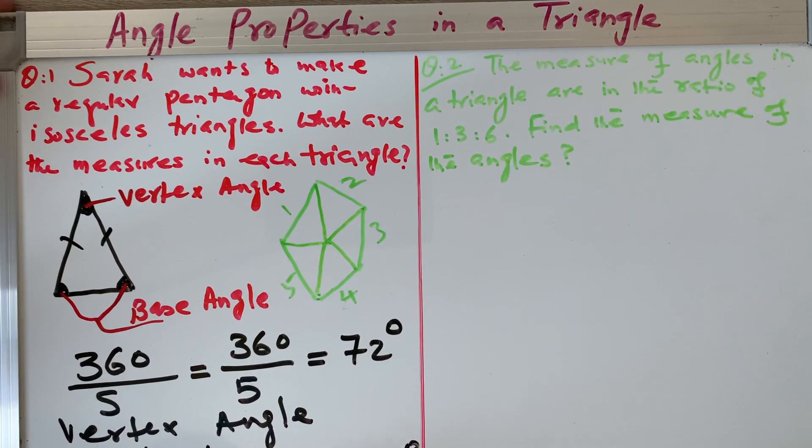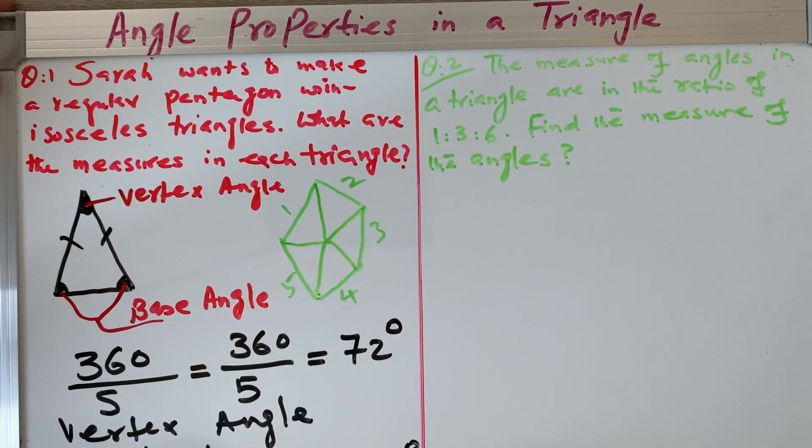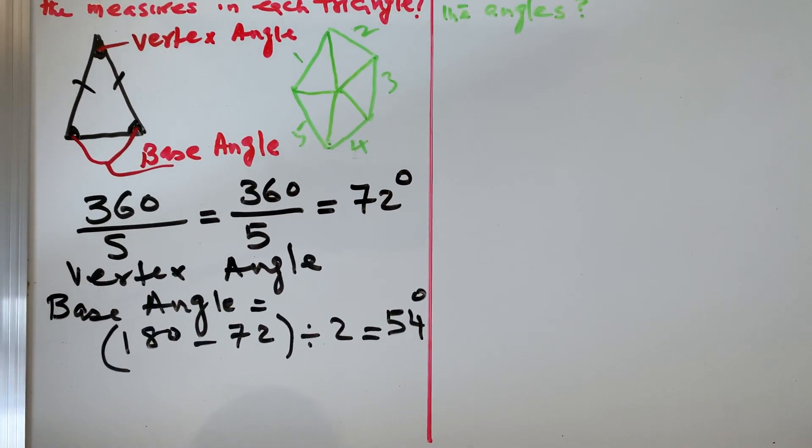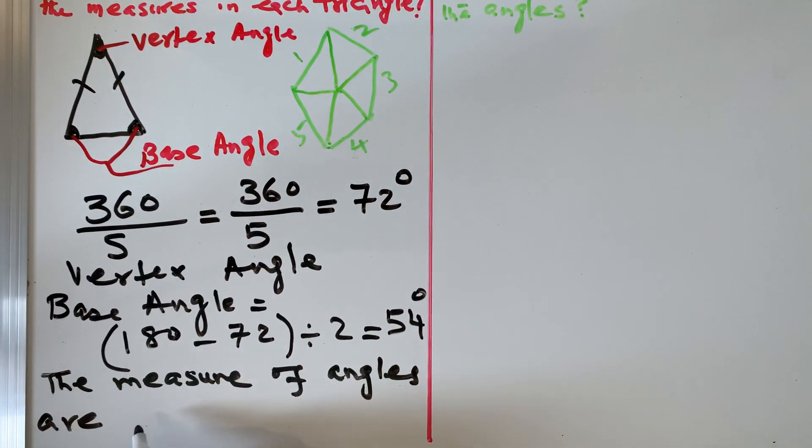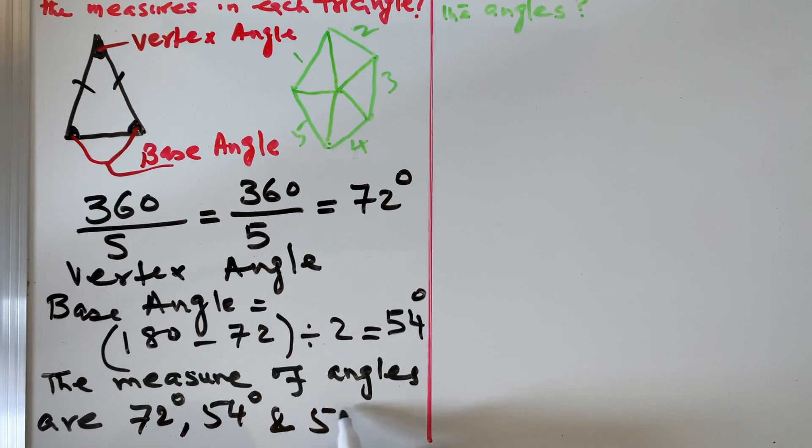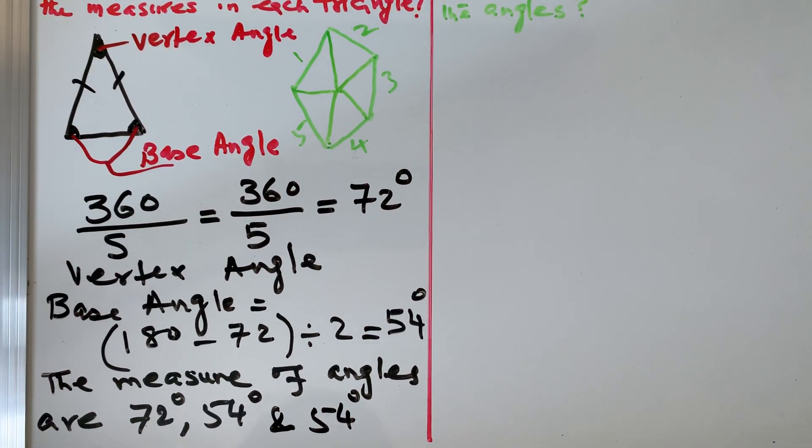Sum of all angles of a triangle is 180. 180 minus 72 gives me the sum of two angles. But these two angles are equal. The base angles are equal, so we divide it by 2. So we got 54. The measure of the angles are 72 degrees, 54 degrees, and 54 degrees. So if you add all these three, that will turn back to 180, which is the sum of the interior angles of any triangle.